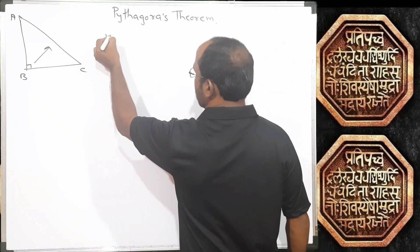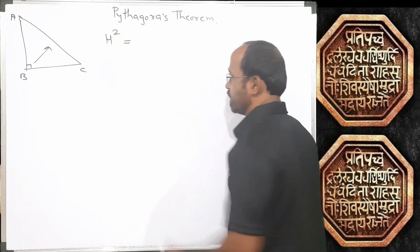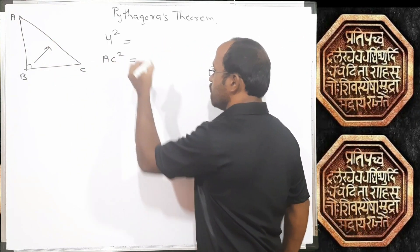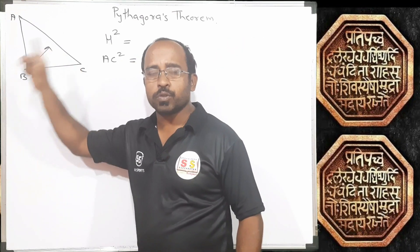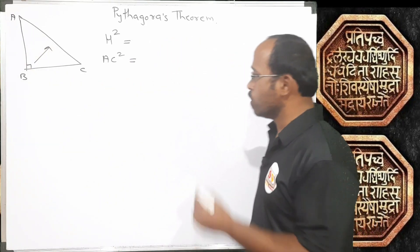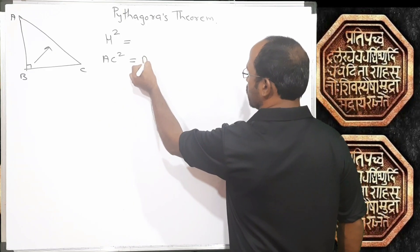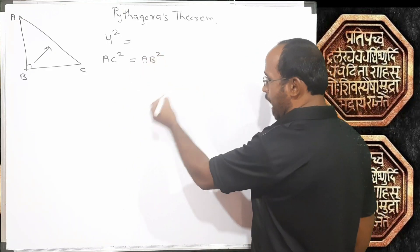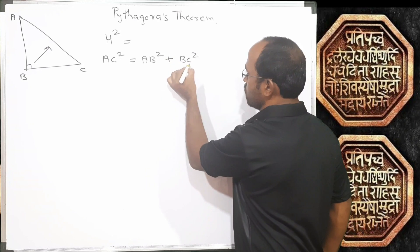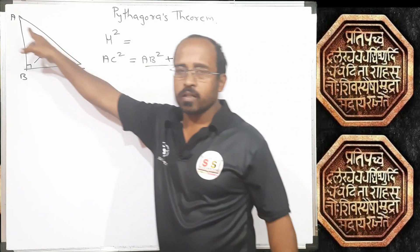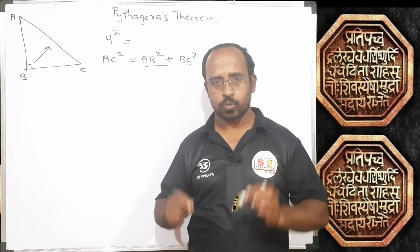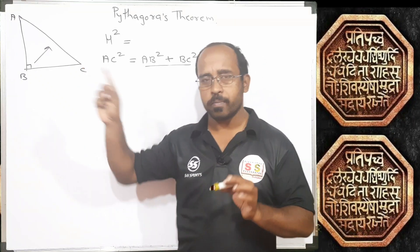Let us denote the hypotenuse with capital H. So, the square of the hypotenuse — the square of AC — is equal to the addition of the squares of the remaining two sides, which are BC and AB. The rule is: square of hypotenuse is equal to the addition of squares of the remaining two sides.